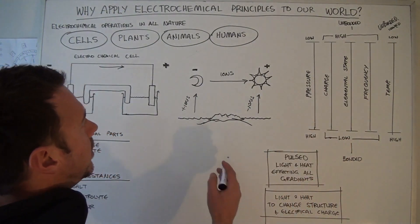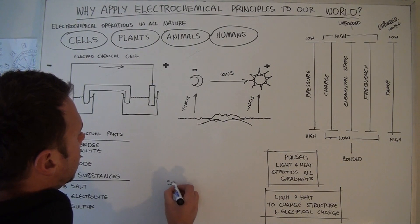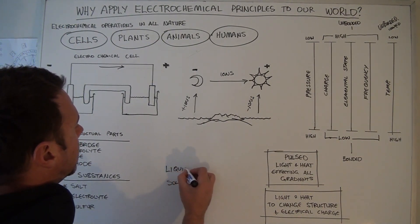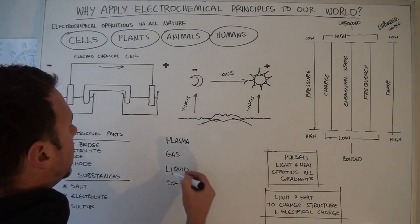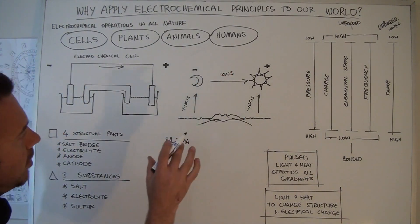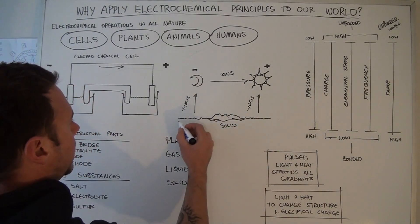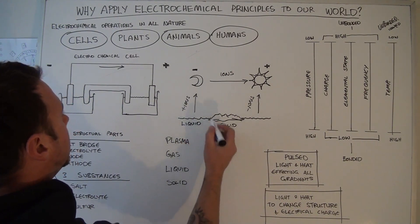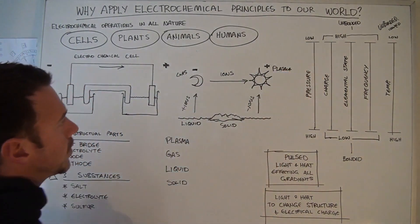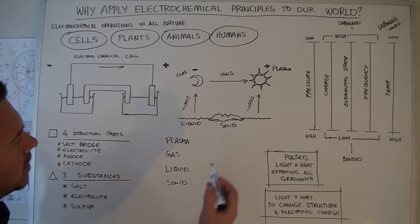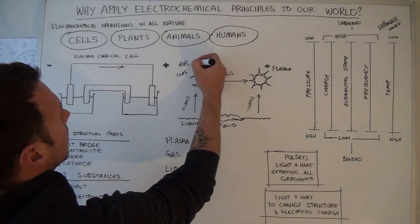We also have an elemental state gradient in our world. The elemental states are solid, liquid, gas, and plasma. This applies to our world and directly to this model as well: the earth is solid, the electrolyte or oceans are liquid, the moon is gas, and the sun is plasma. This also relates to the four classical elements — earth, water, air and fire.